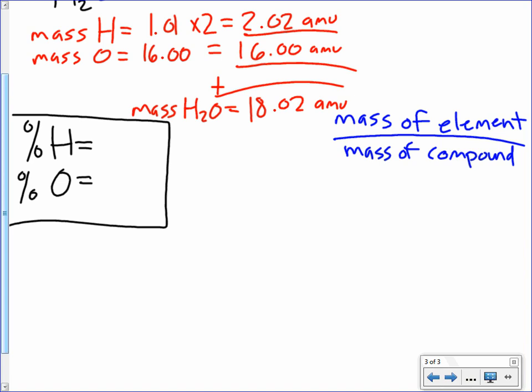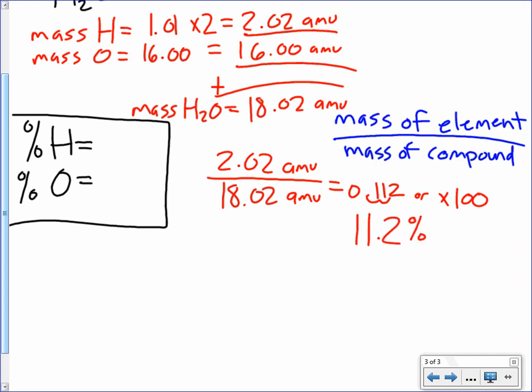So we're going to use our formula that we just wrote over there. Let's do mass of element, which is going to be the mass of hydrogen, which, if you remember from up there, was 2.02, divided by the mass of the compound, which is just the molar mass. Put that in a calculator, 2.02 divided by 18.02, and we get 0.112. We want three sig figs. So when you are calculating a percentage, you always want to remember to either move the decimal point twice or multiply by 100. They have the same effect. So basically, the result you're going to get is this. So our percent hydrogen is going to be 11.2%.